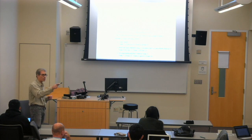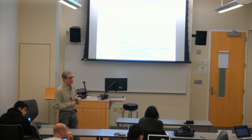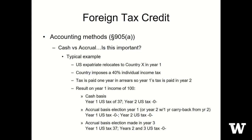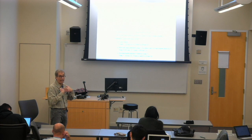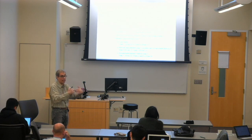Any questions on this? Yes — so in the final accrual example, where he elects in year two, can he carry back like he did in the cash basis example? Right. If he makes the election in year three, he can carry back to year two, but he cannot carry back to year one. So the 37 paid to the U.S. will never come back. That's gone.